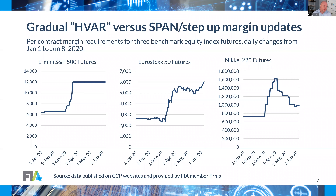The slide shows the E-mini future as an example — a more step-up approach to margin adjustments versus the middle graph showing a more gradual uptick in periods of volatility, which is what an HVAR model gives you. With HVAR, there's not that shock rise in initial margin and subsequent potential liquidity crunch within a firm. Does that make a material difference? It could, especially at smaller FCMs where the step-up could turn into a liquidity issue. A more gradual approach does make sense to soften the liquidity impact.